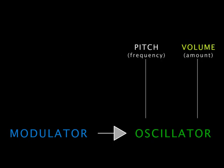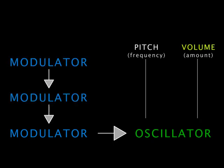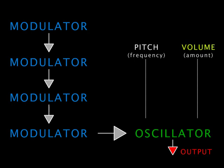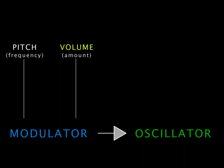When you apply an envelope to the final oscillator, that's exactly like normal synthesis. Route a pitch, and the overall pitch changes. Volume, and the overall volume changes. FM programs can have multiple modulators — stacks of them affecting each other. Look at the oscillator volume as the final VCA in an analog synth, and look at the volume and pitch settings of the modulators as filter and wave shape settings.